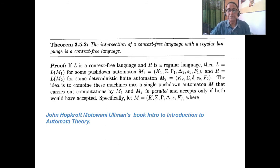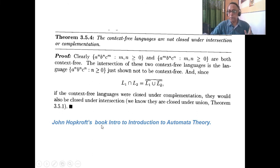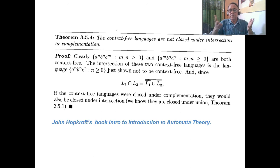We will give some examples. Context-free languages are not closed under intersection and complementation — this is from Hopcroft's book, which is available in soft copy. Obviously: if you see A to the power N, B to the power N and another language, and you make an intersection, you get a language that we know is context-sensitive, not context-free. So definitely that rule does not hold.